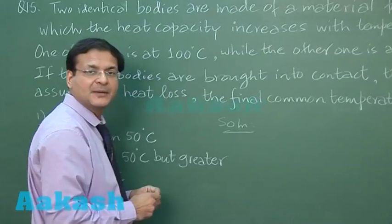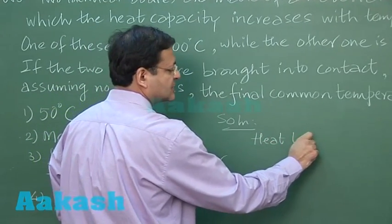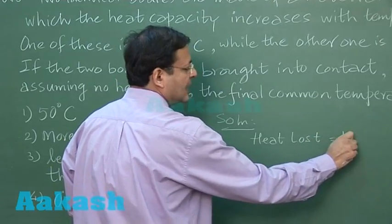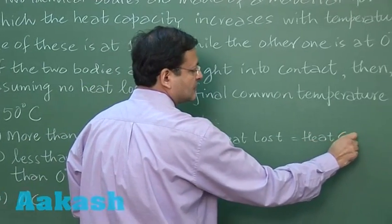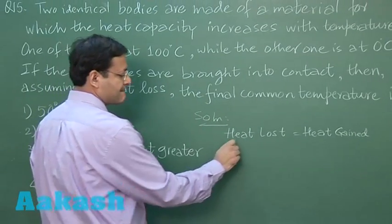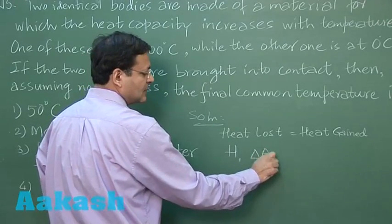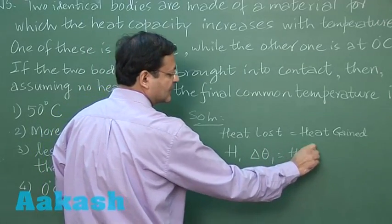this principle of calorimetry that heat lost is equal to heat gain. Heat loss is equal to heat gain. And this is heat capacity. Say I am denoting by h1 into delta theta 1, this is h2 into delta theta 2.